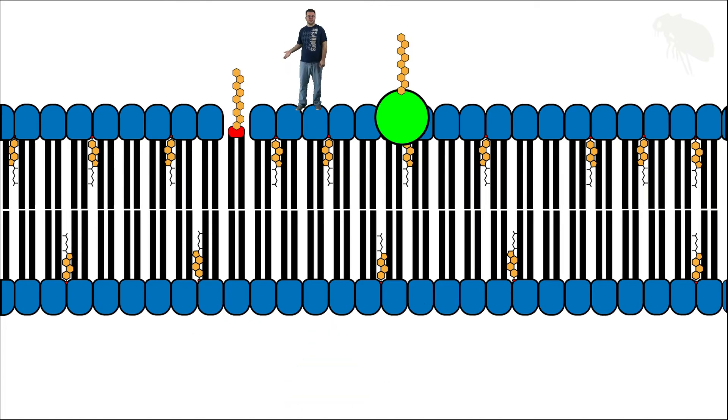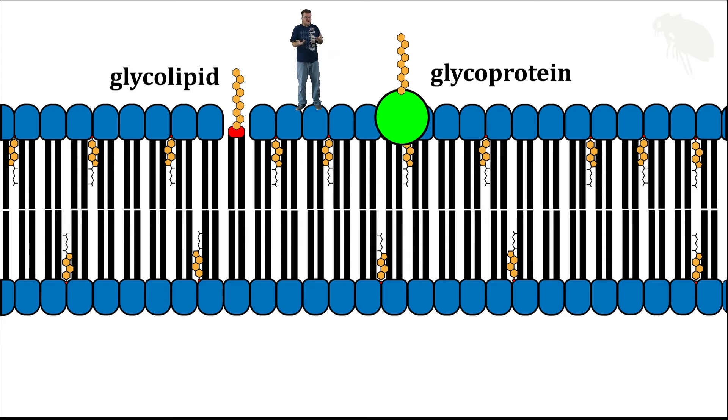I have here to my right a glycolipid, to my left a glycoprotein. These are other complex organic molecules that are in the cell membrane, and when we put all of these things in together, we get something like this.